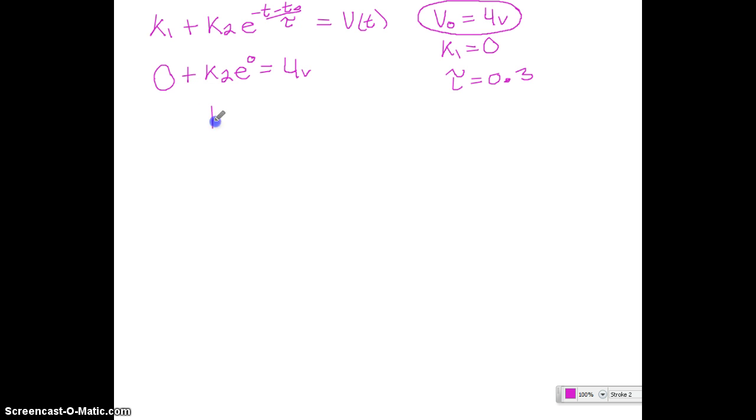So now we can just solve for k. So k2 is actually going to be equal to 4 volts. So we can plug that back in along with everything else and we'll be all done with this equation. So we have v of t is equal to k1 which is 0. So we're going to leave that out. Plus k2 which is 4 e to the negative t. Our initial t0 was also 0. So we're going to leave that out. Divided by tau which is 0.3. And that one is all solved.